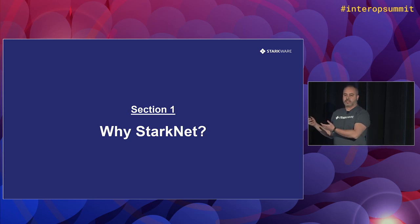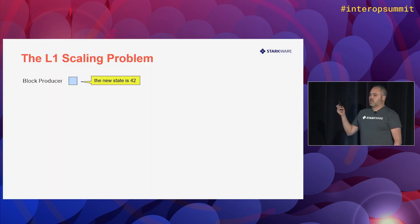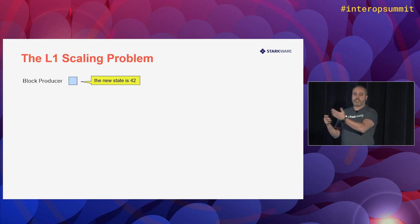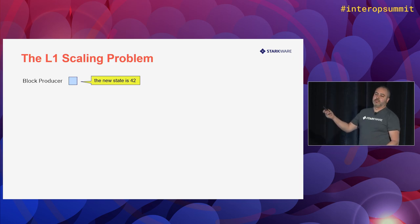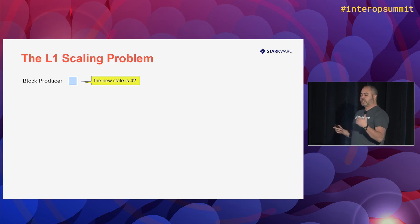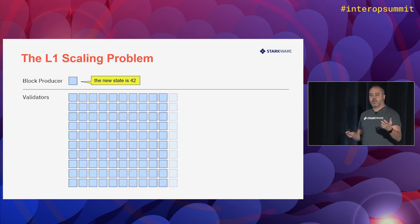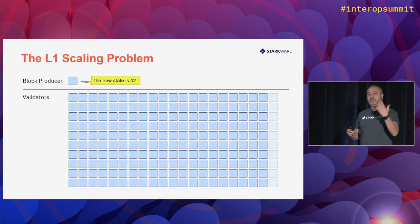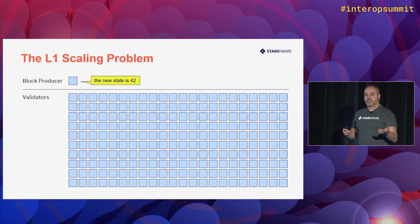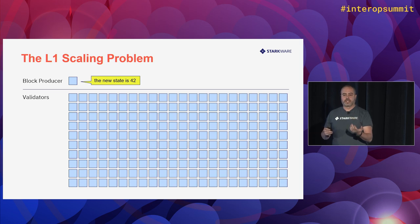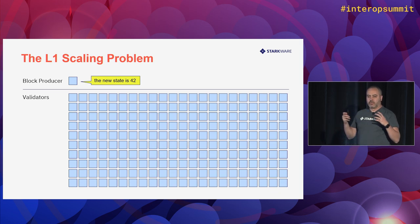So why is it important to create StarkNet? Looking at the scaling problem of layer one: when a block producer takes transactions, executes them, and proposes a new state for Ethereum, all the nodes in the network don't just trust that value. They re-execute the same transactions independently over and over. As a result, even simple transactions consume a lot of processing power for the whole network because of all that re-execution to validate the result.